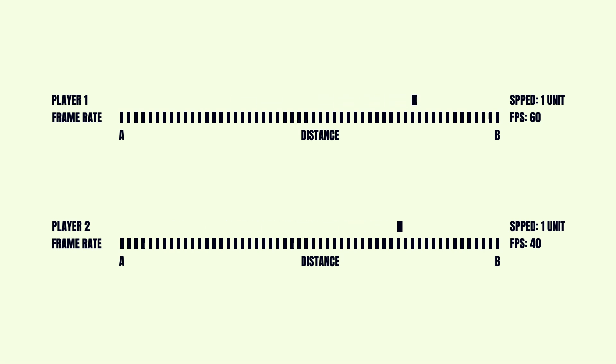Well, not really. The issue is that if we use a different machine with lower specs — say that machine can only reach 40 frames per second — that object will only move 40 units per second. The game experience will not be the same on different machines. But programmers have come up with a solution to solve this problem.